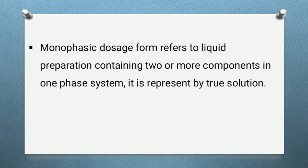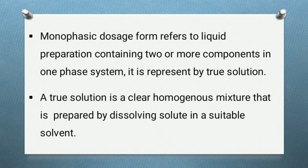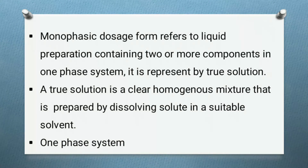Monophasic liquid dosage form refers to a liquid preparation containing two or more components in a one-phase system. It is represented by a true solution. A true solution is a clear homogeneous mixture prepared by dissolving a solute in a suitable solvent. The solute is the component that gets dissolved and the solvent is the medium in which the solute dissolves, giving a one-phase system with no separation between the components.